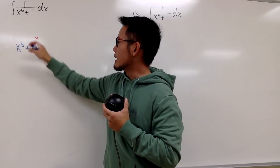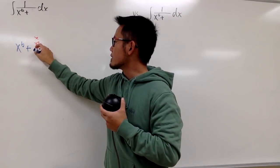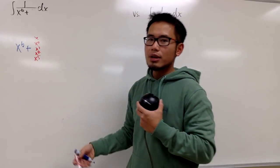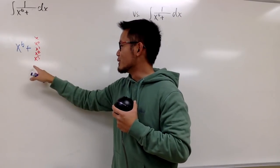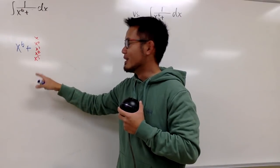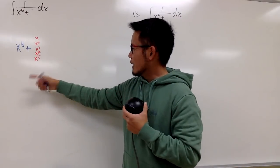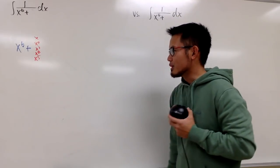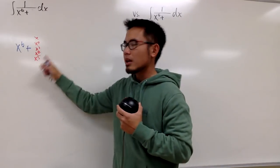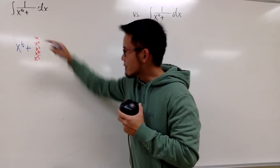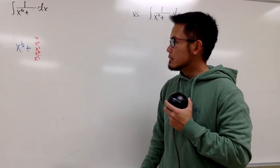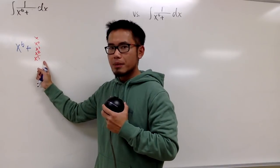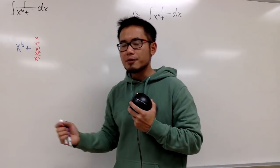I don't want to put x to the 7th or 8th — I think those exponents will be too big. Let's try x to the 6th power plus x to the 5th power. I can factor out x to the 5th power right away, and you will see it's actually pretty straightforward from here because we can just do partial fractions.